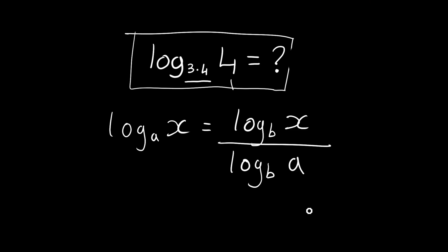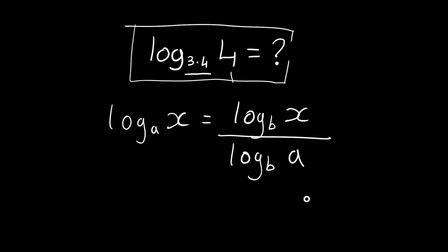Now with this equation, we can set a equal to 3.4, and that will be our base up here. And our argument x will equal 4. Now because we can solve base 10 logarithms quite easily using a calculator, we can set b equal to 10. So these will be base 10 logarithms here.